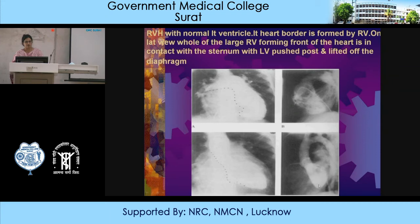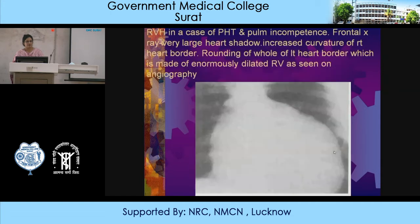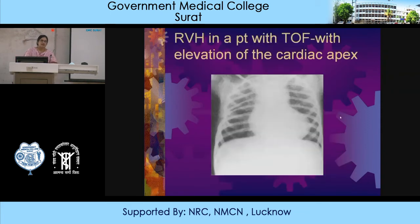You can see right ventricular hypertrophy with rounding of the entire left heart border, which is made up of an enormously dilated right ventricle as seen on angiogram. In TOF with right ventricular hypertrophy, there is elevation of the cardiac apex.